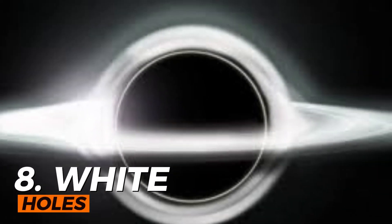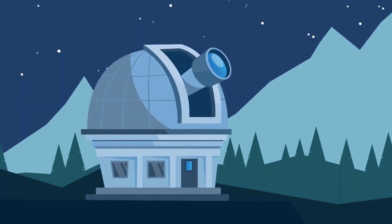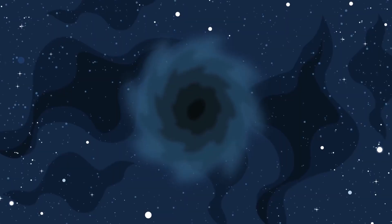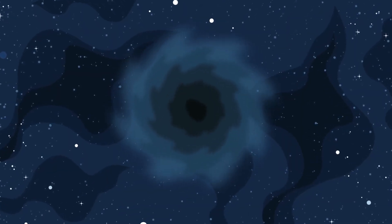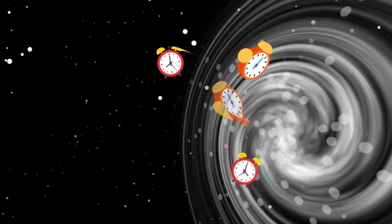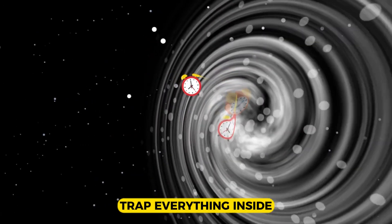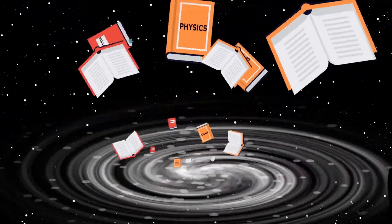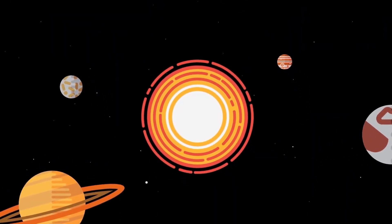Number 8: White Holes. White holes are one of the strangest phenomena in outer space that have intrigued scientists and philosophers for decades. They are hypothetical regions of spacetime that function in the opposite way to black holes. While black holes are regions of extreme gravity that trap everything inside, white holes are regions of extreme repulsion that push everything out. Nothing can enter a white hole, but matter and light can escape from it.